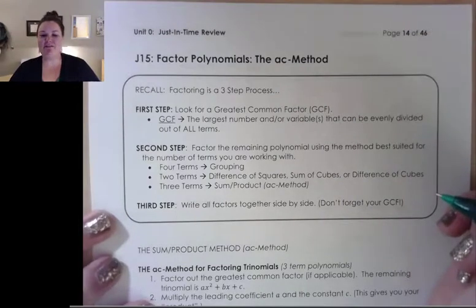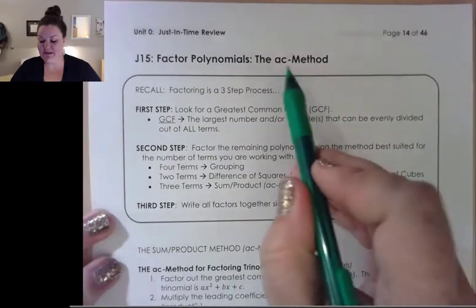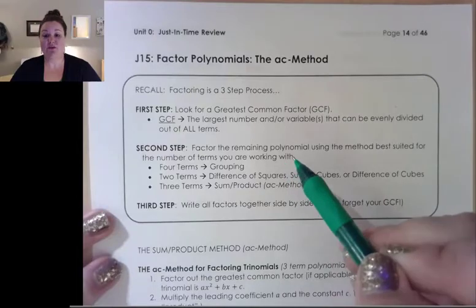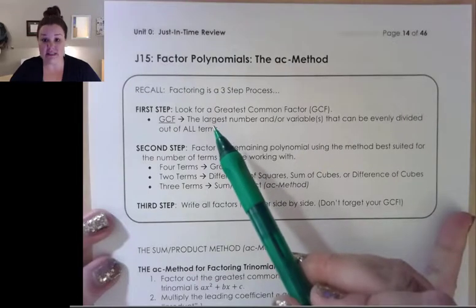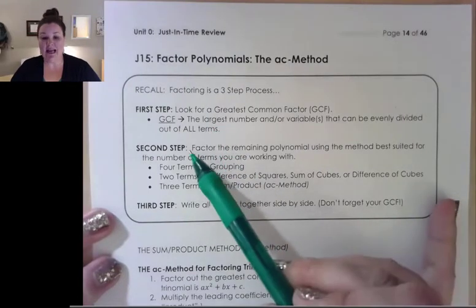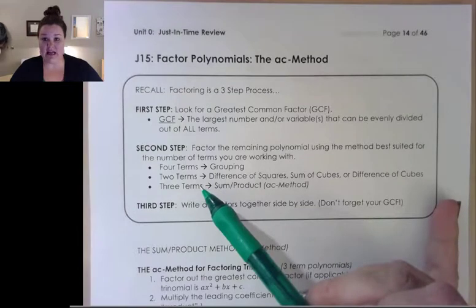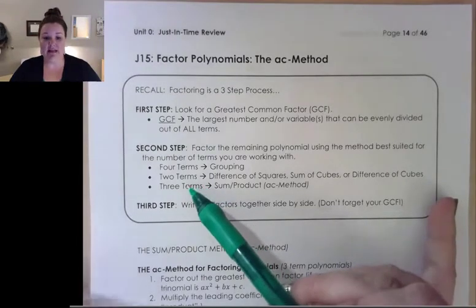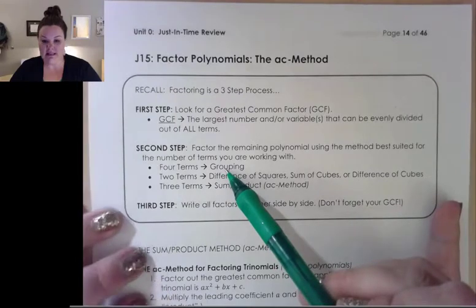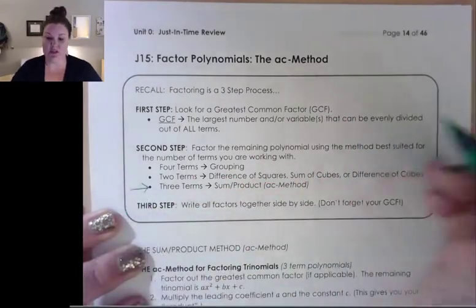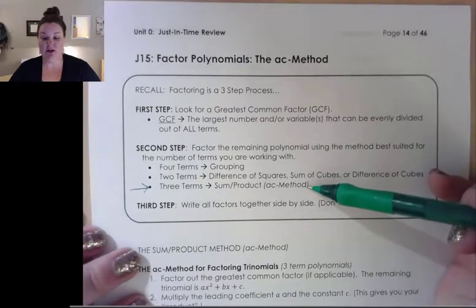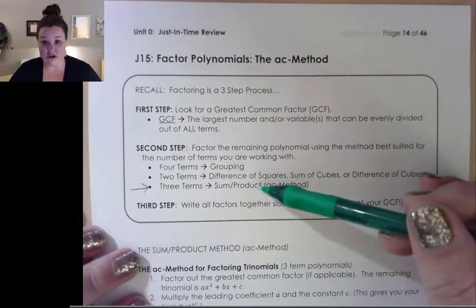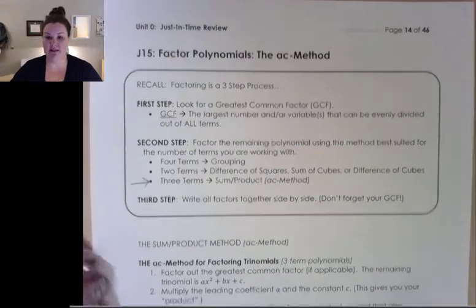Moving right along into J15, which is factoring polynomials — specifically focusing on the AC method. In the last video we talked about taking out a greatest common factor, which is always our first step. Our second step is to factor based on how many terms we have. With four terms we use grouping; today we look at what happens when we have three terms — we use the AC method, which utilizes the sum-product chart.